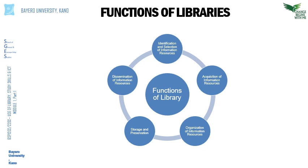For instance, an academic library has several faculties and departments within the institution of learning. Libraries are expected to select and develop information resources to satisfy the information needs of students, staff, and researchers from these faculties and departments. Therefore, libraries must on a regular basis identify and select relevant, current, and useful information resources. With so many information topics out there in the world, libraries must properly vet and ensure the information resources selected are directly in line with the needs of their users.